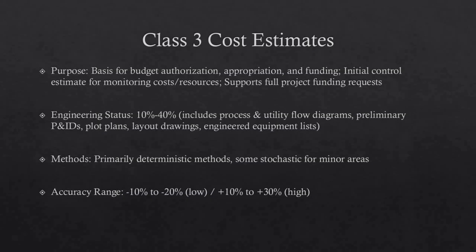Class 3 estimates are used as the project budget until replaced by a more detailed estimate. In many owner organizations, a Class 3 estimate may be the last estimate required and could form the only basis for cost and schedule control. Class 3 estimates usually involve more deterministic estimating methods than stochastic methods, with a high degree of unit cost line items, though these may be at an assembly level of detail. Typical accuracy ranges are minus 10% to minus 20% on the low side and plus 10% to plus 30% on the high side. Ranges could exceed those shown in unusual circumstances.